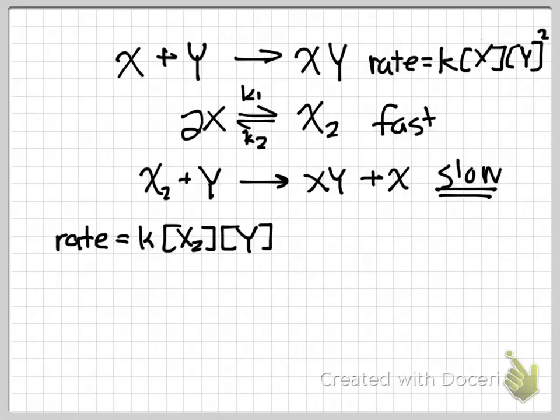In order to relate X2 back to X, we're going to use this first reaction. This reaction has a double arrow, which represents equilibrium, or a reversible reaction, which we'll talk more about in the next chapters.